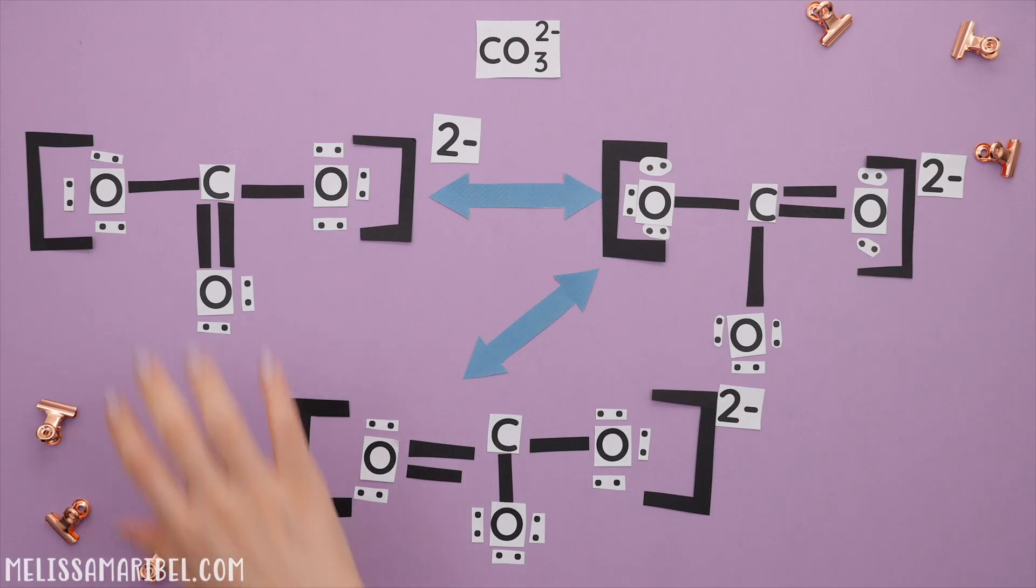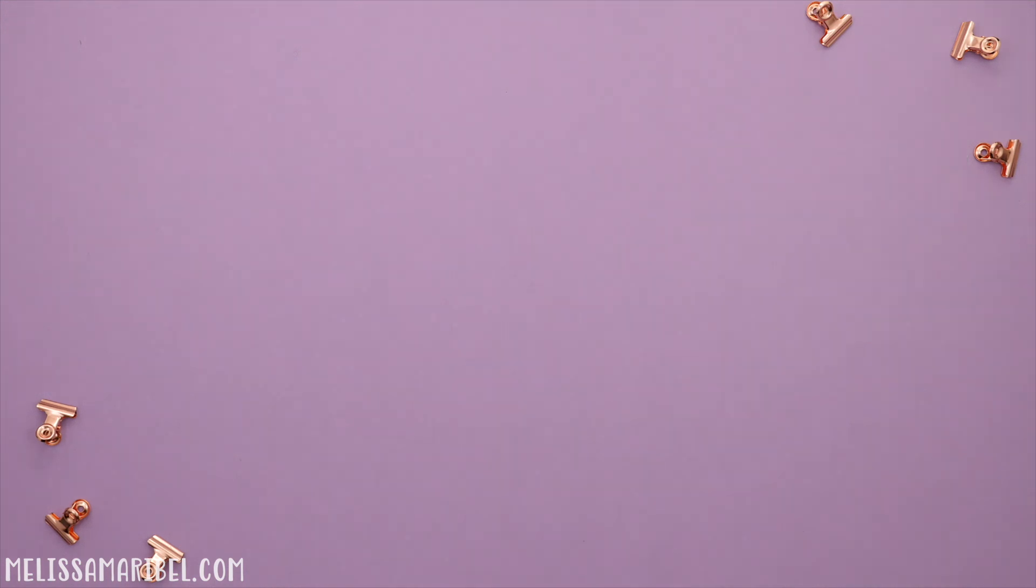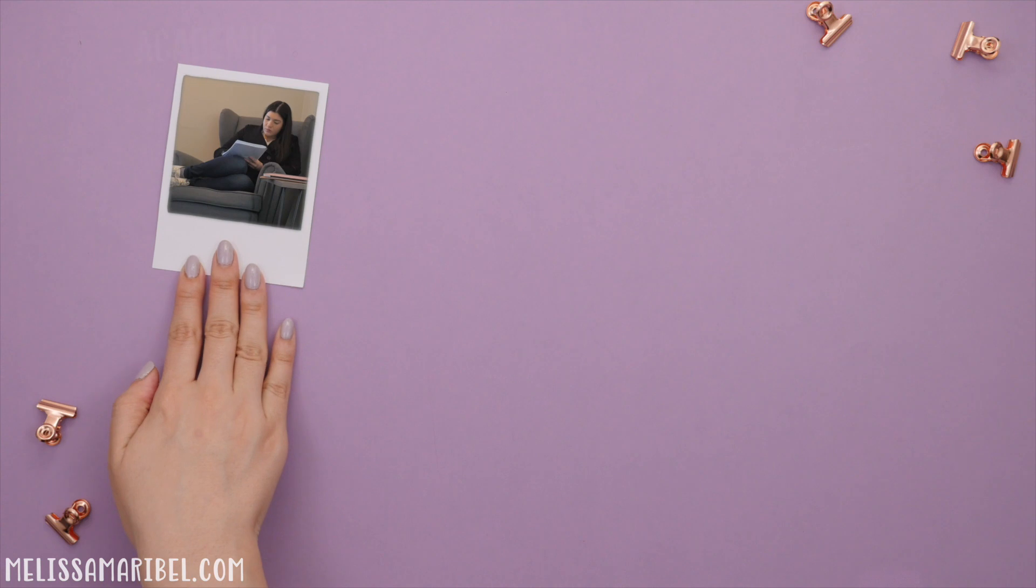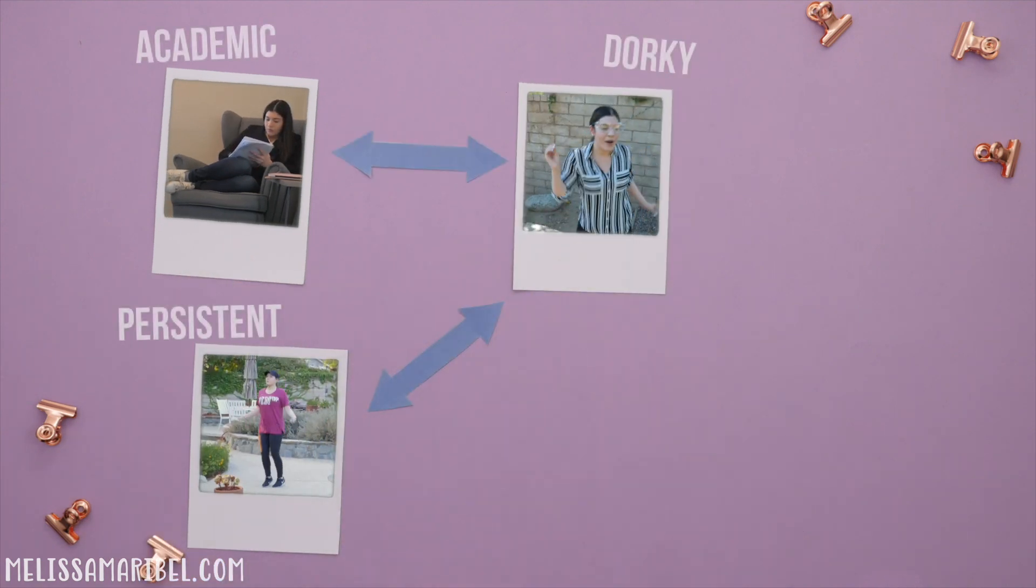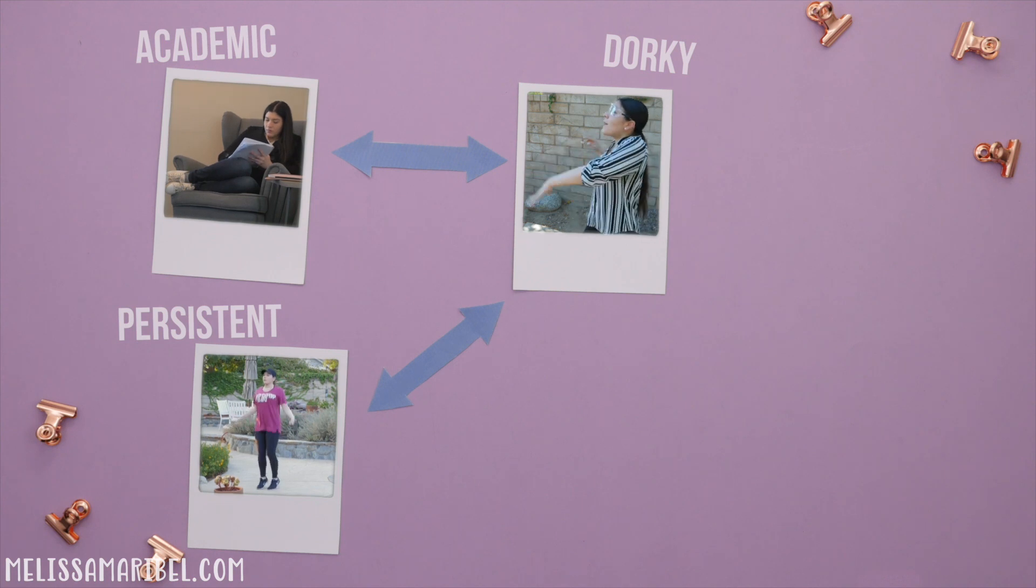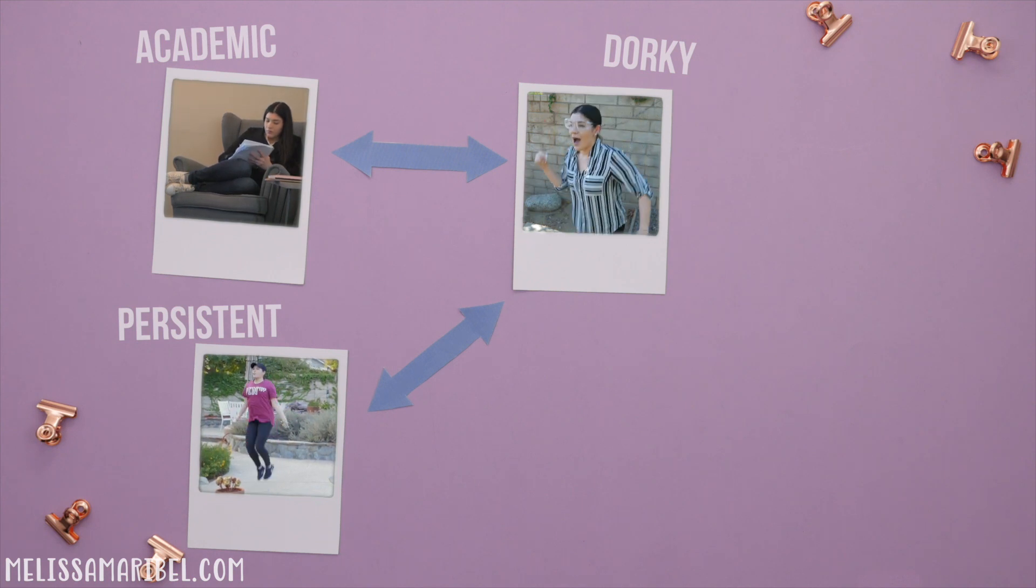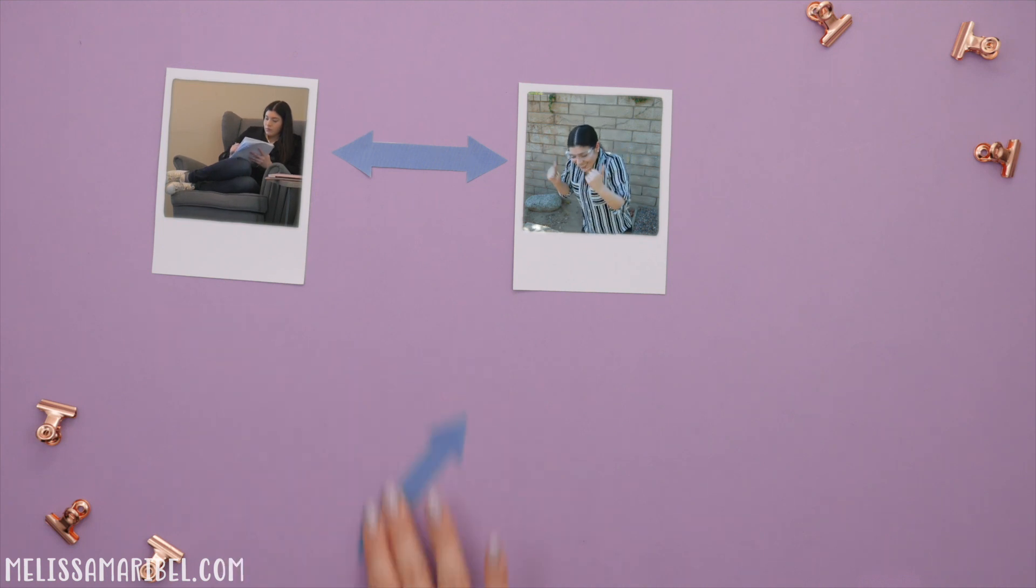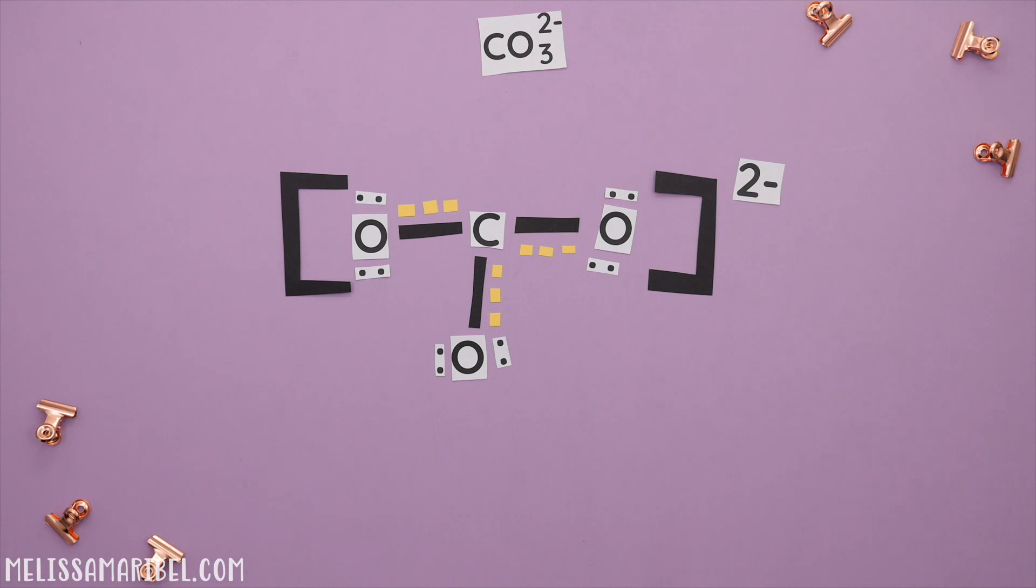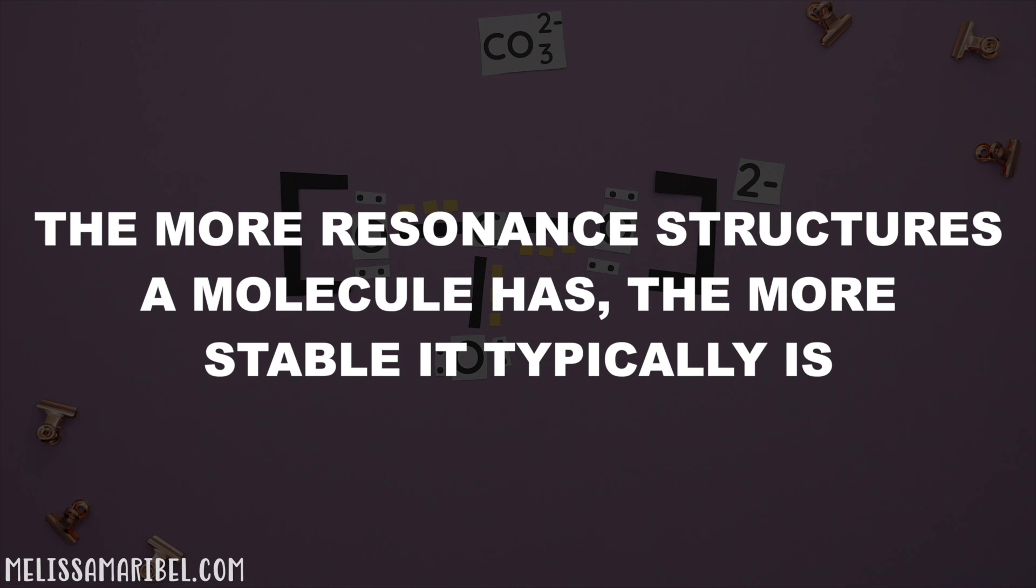If we were to combine all the resonance structures, it would give us a resonance hybrid. Think of it this way. Every person has different personality traits. Let's say, in my case, I'm academic, dorky, and persistent. Combine all those traits together and you get me. Same goes for our carbonate ion. By combining all the resonance structures or personality traits, this gives you the complete Lewis structure, which is known as the resonance hybrid. The more resonance structures a molecule has, the more stable it typically is.